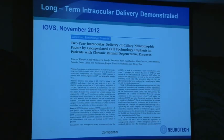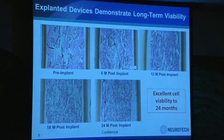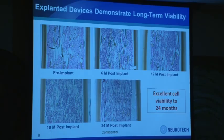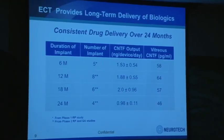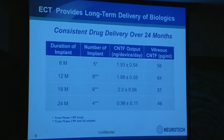Our long-term delivery kinetics study has been published in IOVS and made the cover. Cellular grafts explanted from patients out to 24 months showed excellent cell viability throughout the implantation period. CNTF output was consistent throughout, and vitreous levels were correspondingly consistent. Most recently, we have a five-and-a-half-year explant — the production level is about the same as at six months, and cell viability looked absolutely beautiful. The host has fully accepted our implant.